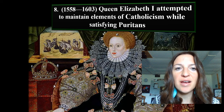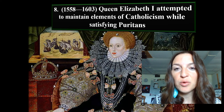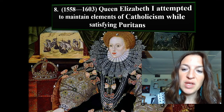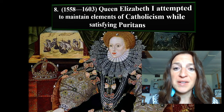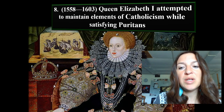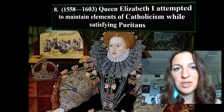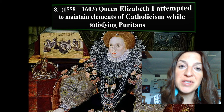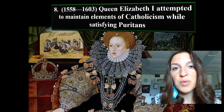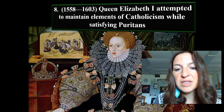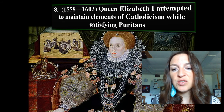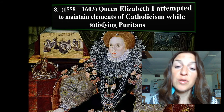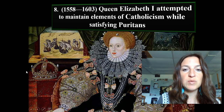Note number eight: Queen Elizabeth I rules following her half-brother Edward and her half-sister Mary. Edward was in favor of the Protestants, Mary in favor of the Catholics, and then Queen Elizabeth tries to strike a balance between the two. She rules for a very long time and by a lot of measures rules exceedingly well, trying to keep peace between different Christian groups and defend England against the Spanish Armada.